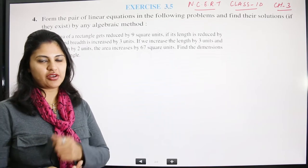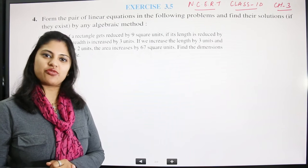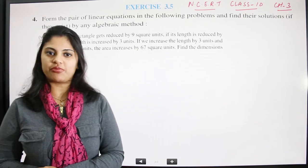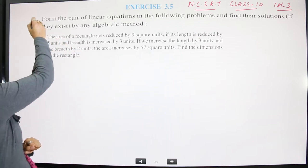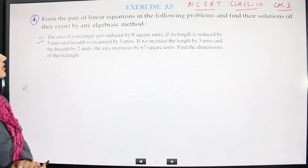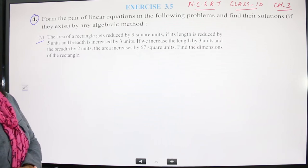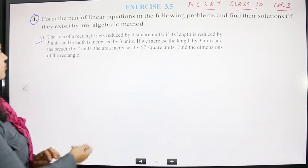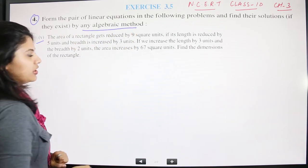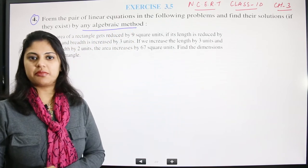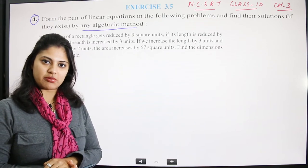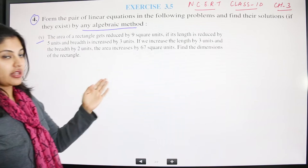Hello everybody, welcome to Visual Learning Portal where visuality conveys best. Today we are going to do NCRT Class 10 Chapter 3, Exercise 3.5, Question 4, fifth part. The question asks us to find solutions of a pair of linear equations using any algebraic method — elimination method, cross multiplication method, or substitution method.